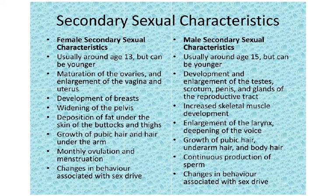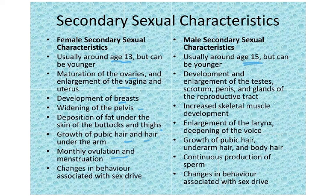The timing differs slightly. In females, puberty is around age 13: maturation of the ovaries, enlargement of the vagina and uterus, development of breasts, widening of the pelvis, deposition of fat under the skin of the buttocks and thighs, growth of pubic hair and underarm hair, monthly ovulation and menstruation, and changes in behavior associated with sex drive. In males, it is around age 15: development and enlargement of the testes, scrotum, penis, and glands of the reproductive tract, increased skeletal muscle development, enlargement of the larynx and deepening of the voice, growth of pubic, underarm, and body hair, and continuous production of sperms.